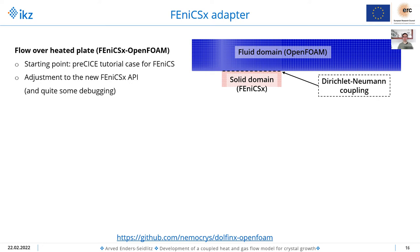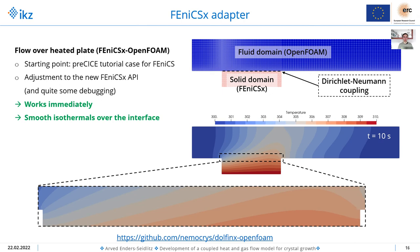Regarding the flow over a heated plate test case with the FEniCSx-OpenFOAM coupling: I used the preCICE tutorial cases as a starting point and adjusted it to the new API, which included quite a lot of debugging. The case is shown on the right. We have on top the fluid domain solved with OpenFOAM with flow from left to right, and on the bottom is a solid domain that is heated, with Dirichlet-Neumann coupling between the two domains where temperature and heat fluxes are exchanged. After debugging this worked immediately. You can see smooth isothermals over the different interfaces, and I am really happy that it looks so good.